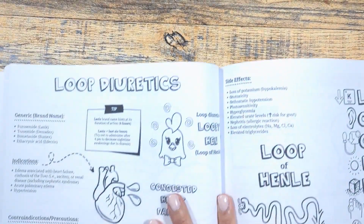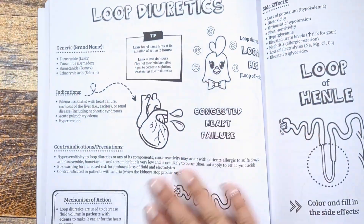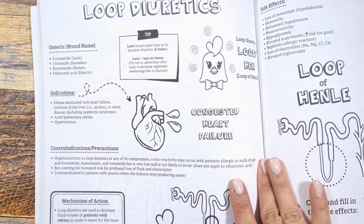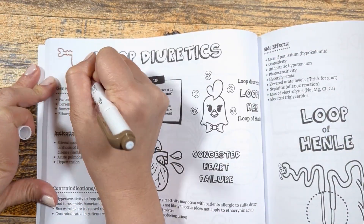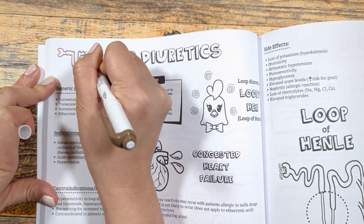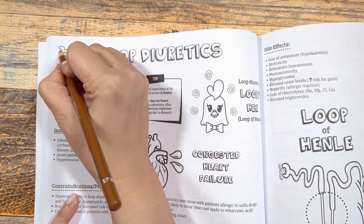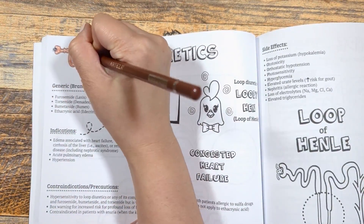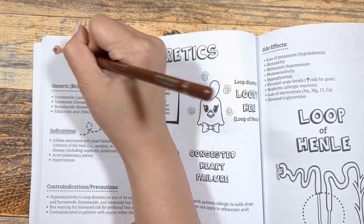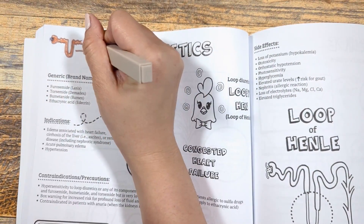Loop diuretics. Let's start by breaking down the word. This class is called loop diuretics because it works on the loop of Henle. As you can see, the basic shape of a nephron has a loop, and these medications work in that specific area.